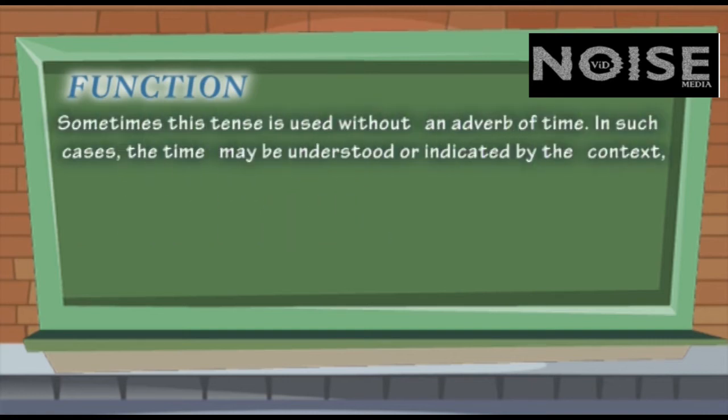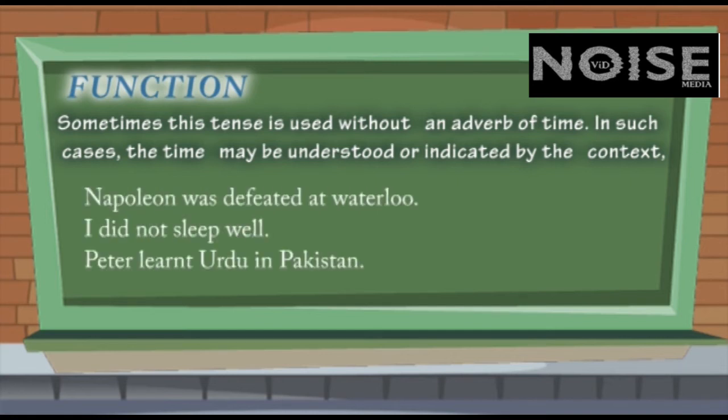Sometimes this tense is used without an adverb of time. In such cases, the time may be understood or indicated by the context. For example, Napoleon was defeated at Waterloo. I did not sleep well, simply means you're talking about the last night. Peter learned Urdu in Pakistan. And here, maybe the time is not important, it is the action of learning.